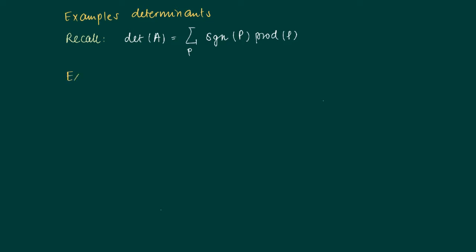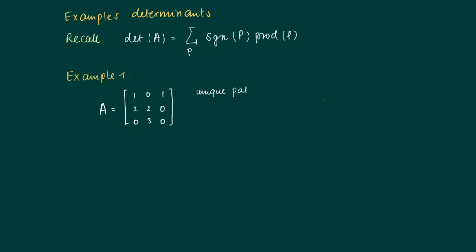Consider the first example of a 3×3 matrix. We see that in the third column, there is only one non-zero element, and in the last row, there is also only one non-zero element. So in order to have a pattern that contributes, we pick the 1 and the 3, which means we must also pick the 2 from the second row, since we cannot pick two elements from the same row or column. Thus we have identified a unique pattern with a non-zero product, and the product of this pattern is 1 × 2 × 3 = 6.